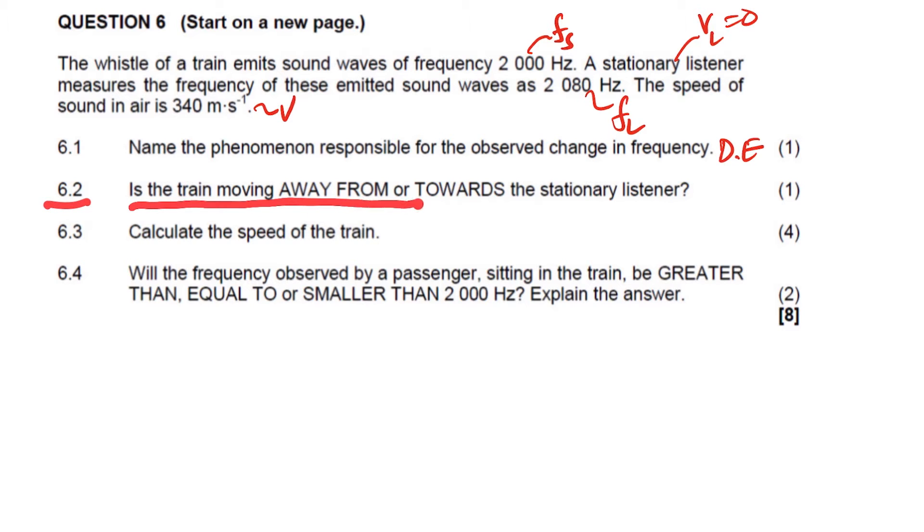Now it says here, is the train moving away or towards the listener? So what tells us? You compare the two values, the frequency of the listener and the frequency of the source. So here, what do we see? We see that the frequency of the listener is greater than the frequency of the source because this is 2,080 and this is 2,000. So if it's that, that means the source is moving towards. Right? So the answer here is towards.